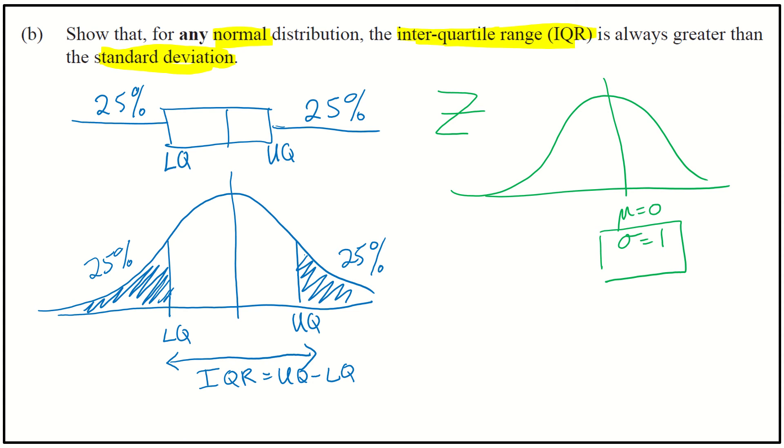So if I could compare these Z values, so if I find Z1 and Z2, that are equivalent to my upper and lower standard quartiles, so that is 25%, the same as the lower quartile, and this area up the top there is 25%, the same as the upper quartile. So if I can compare those Z values and that range with the standard deviation of 1, then I might be able to answer this question.